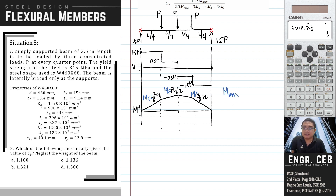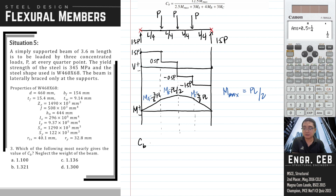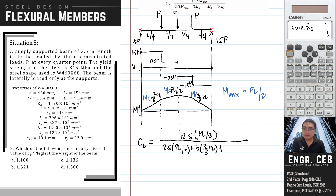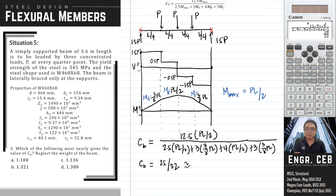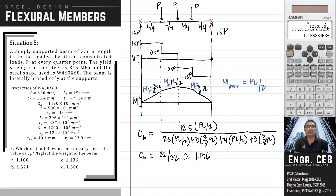Now we calculate Cb: Cb = 12.5·Mmax / (2.5·Mmax + 3·MA + 4·MB + 3·MC) = 12.5·(PL/2) / [2.5·(PL/2) + 3·(3PL/8) + 4·(PL/2) + 3·(3PL/8)] = 25/22 = 1.136. The answer is letter C.